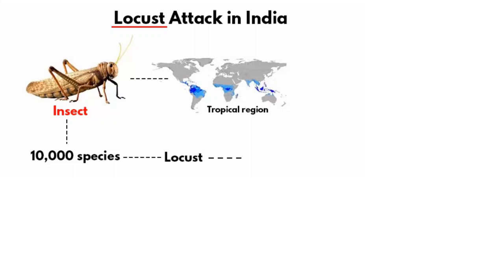Hello friends, welcome to our channel. Today I would like to share some information regarding the locust — this is a current affairs issue. Our topic is locust attack in India. First of all, we have to know about the locust: what is the locust? It is a large grasshopper which you will find in tropical regions. This falls under the category of insects. There are several species of grasshoppers found in different parts of the world except Antarctica.